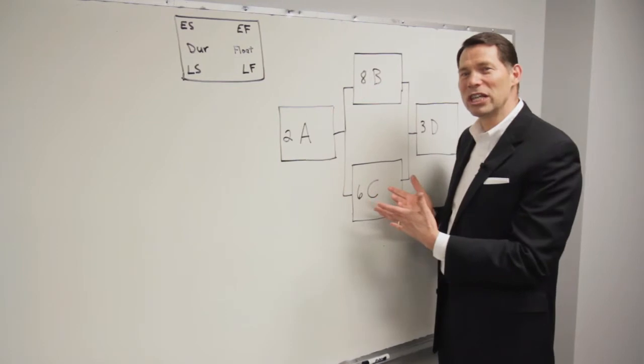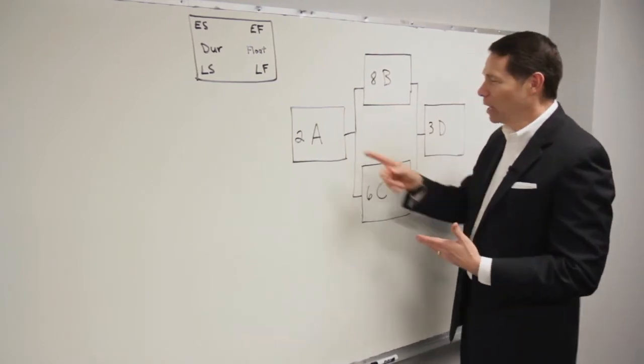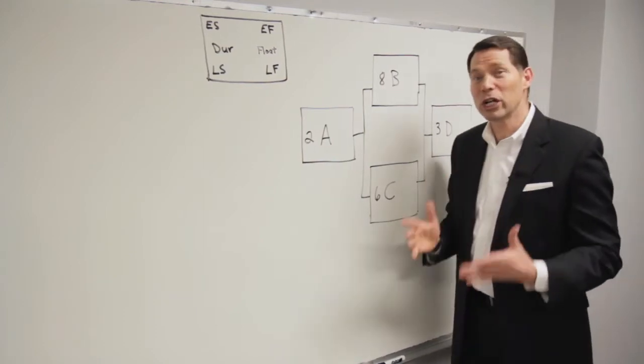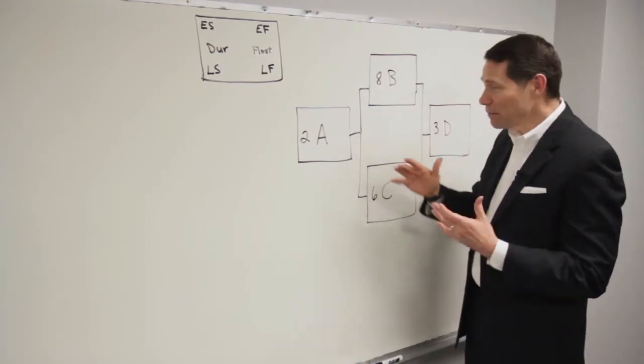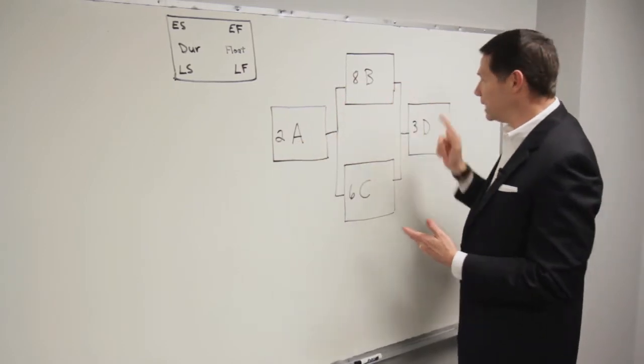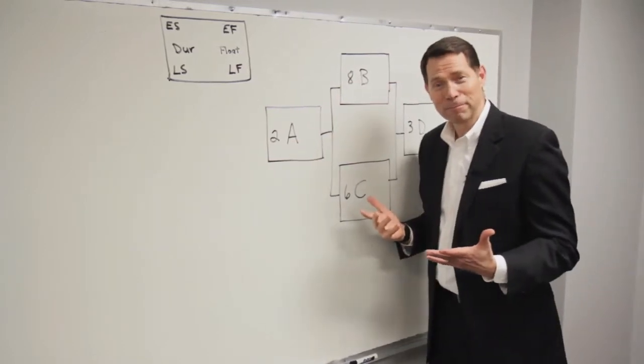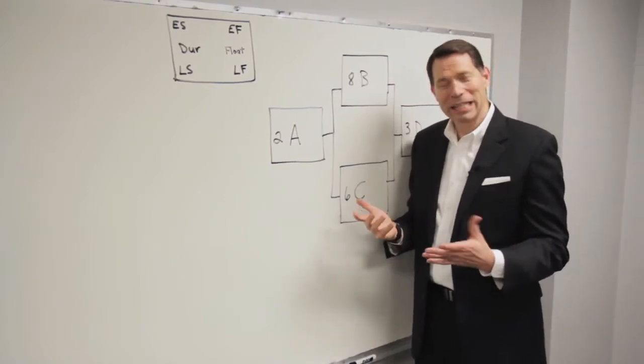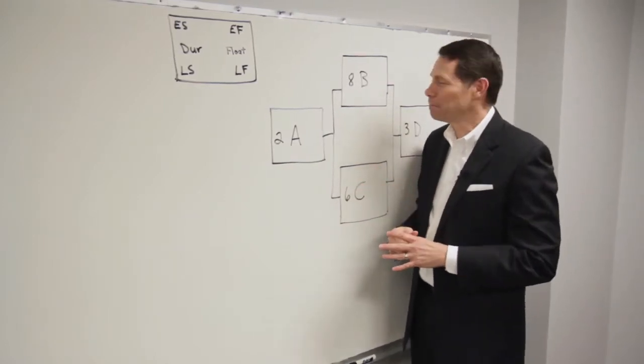When you look at these numbers, which is the longest path? Two plus eight plus three is longer than two plus six plus three. So the critical path, the sequence of activities that represent the longest, that would be ABD is the critical path. Now, with a short project like this, you can just eyeball it. But let's look at this a little bit more deeply.